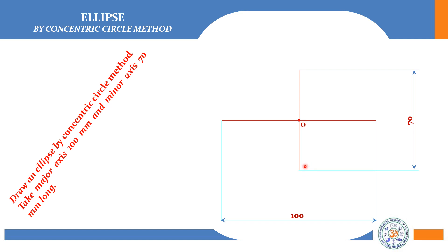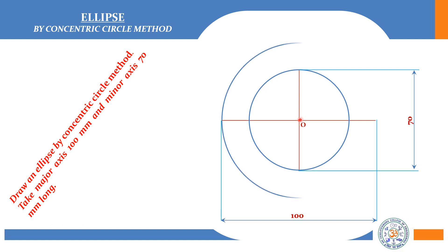Now with this single center, we draw two circles: the first circle with 70 mm diameter and the second circle with 100 mm diameter. These two circles share a single center, which is why they form concentric circles.